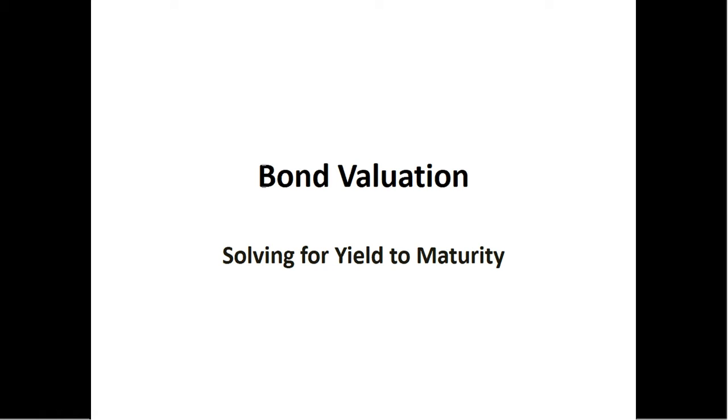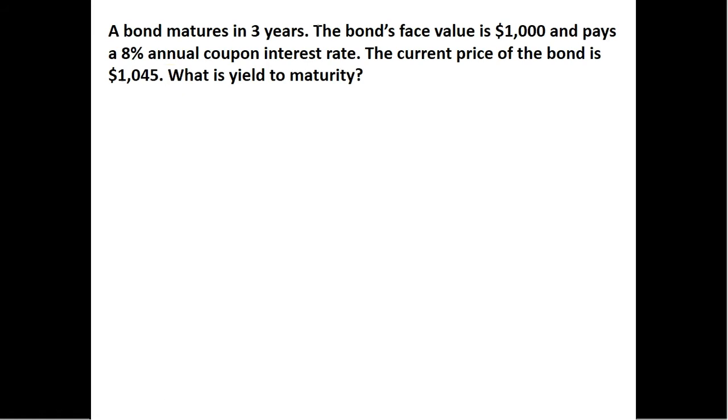So in this video, we're going to solve for the yield to maturity for a bond. We have a bond that matures in three years. The bond's face value is $1,000 and pays an 8% annual coupon interest rate. The current price of the bond is $1,045. What is the bond's yield to maturity?